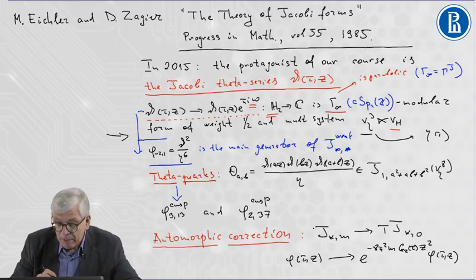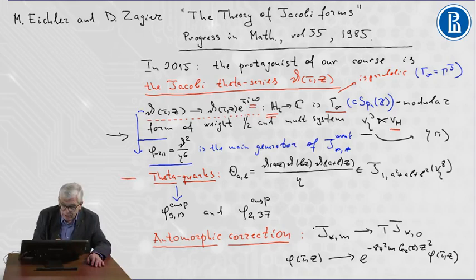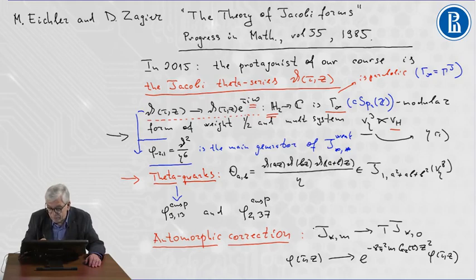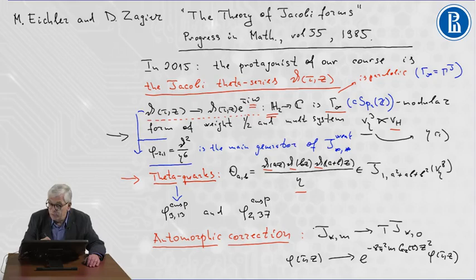But we can construct a less trivial example. Our next example is so-called Theta quarks. This is the product of three Theta series over one eta. We can prove that this is a Jacobi form of weight one of index A squared plus AB plus B squared with respect to a character of order three.